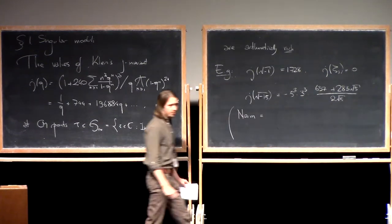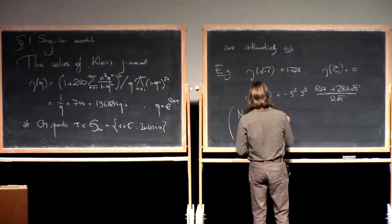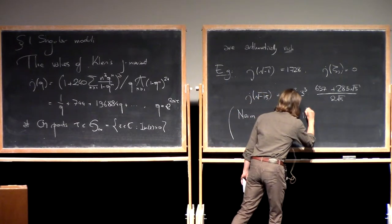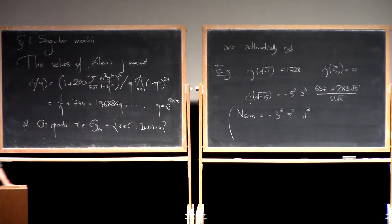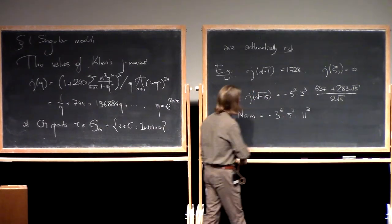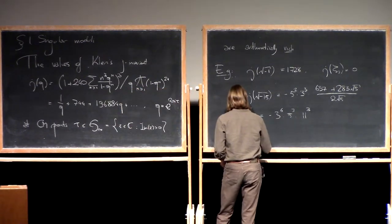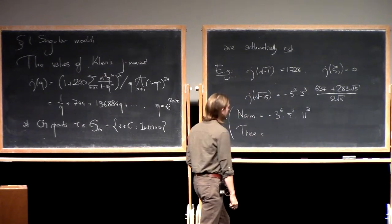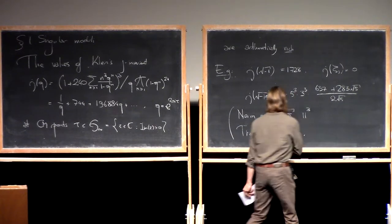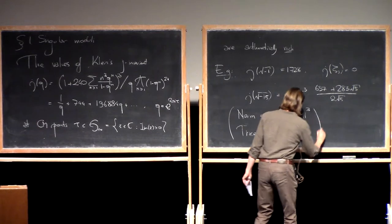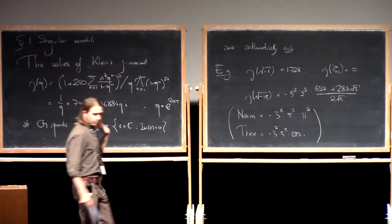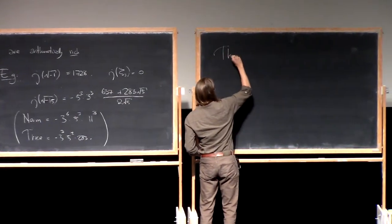It's minus 5 squared times 3 cubed times this magnificent number: (637 plus 283√5) divided by 2√5. Now there's two things I'll note about this number. It's an algebraic number defined over a different field than the argument we fed into the j-function. We can compute its norm, factorize that norm, and what we get is minus 3^6 times 5^3 times 11^3. This is a cube. So we obtain an integer that's extremely smooth, divisible only by very small prime numbers to large exponents.